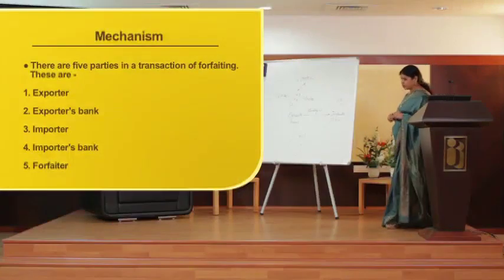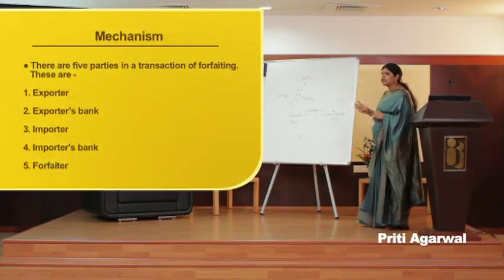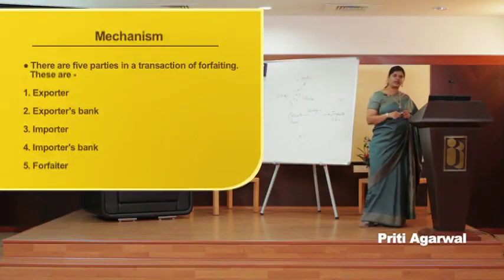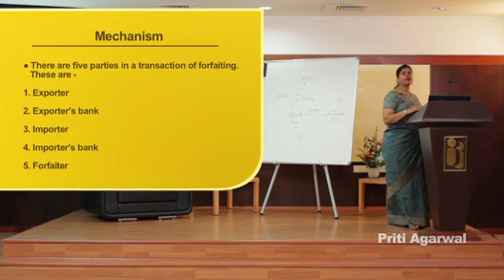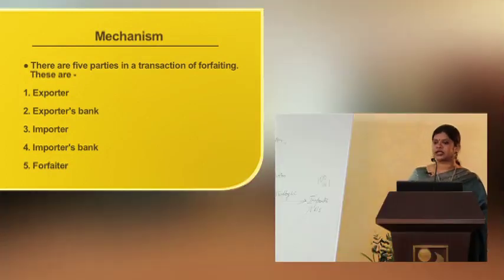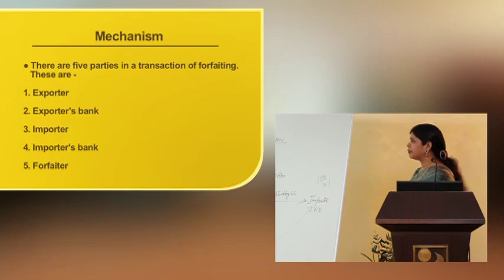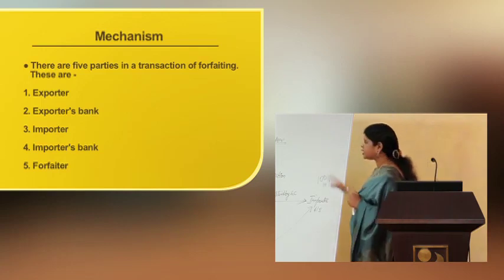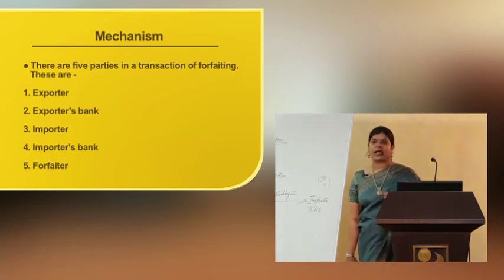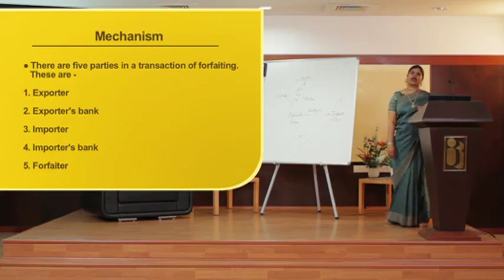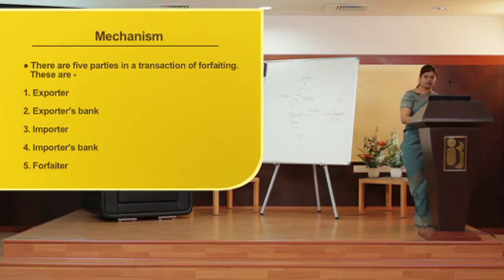Now friends, whereas we have three parties involved in the case of factoring, here we have five parties. The five parties in the transaction of forfaiting are: there is an exporter, there is an exporter's bank, there is an importer, an importer's bank, and a forfeiter.